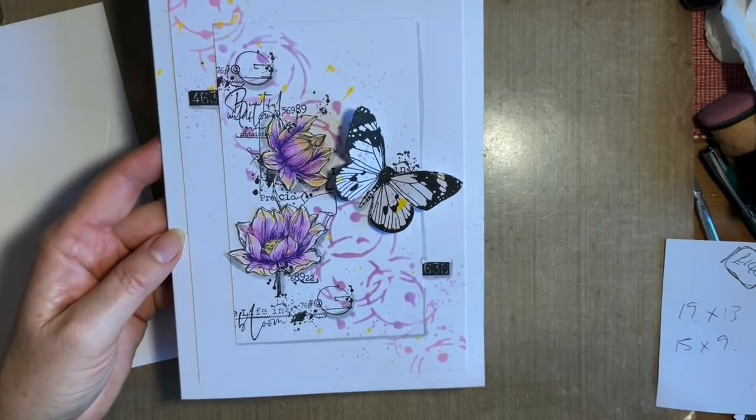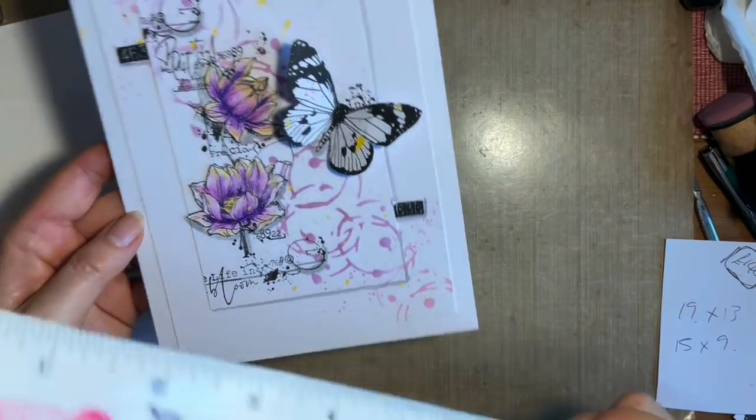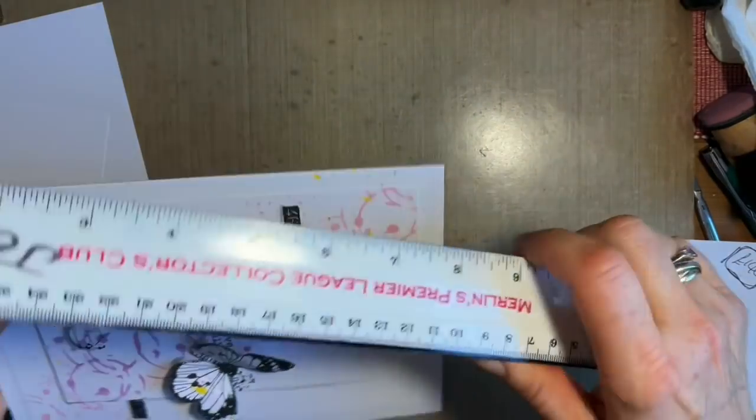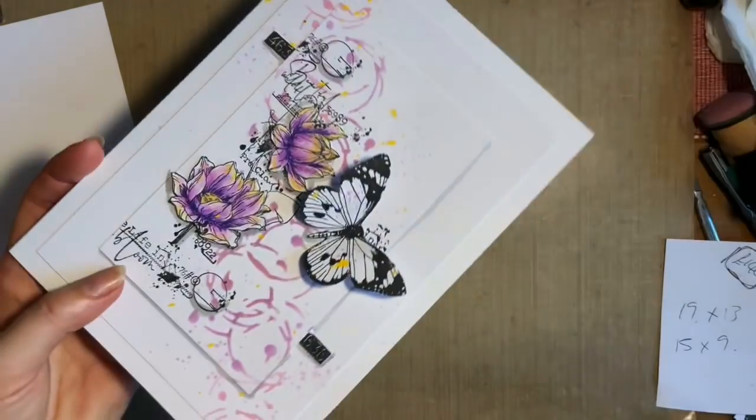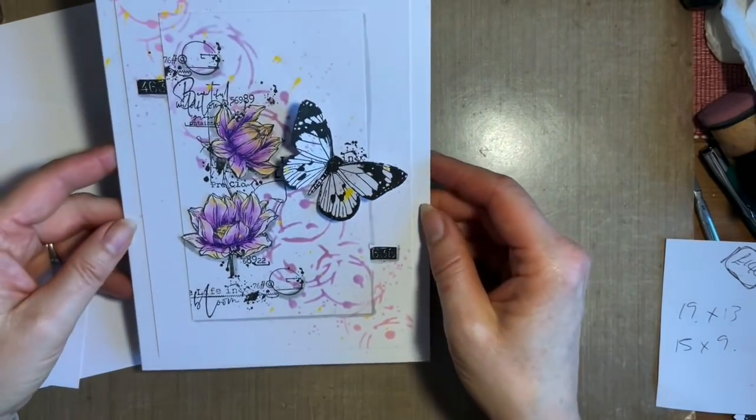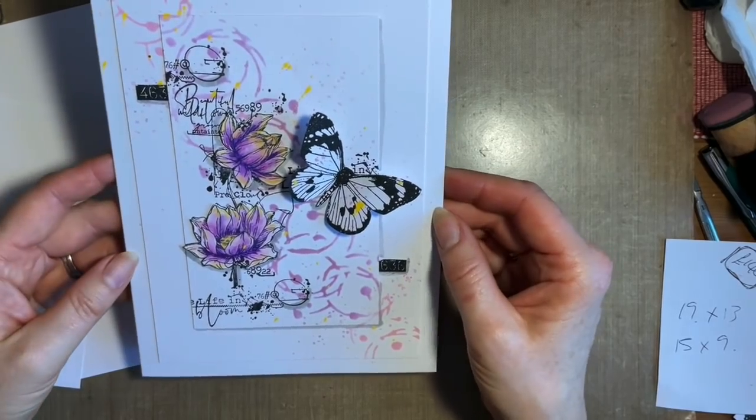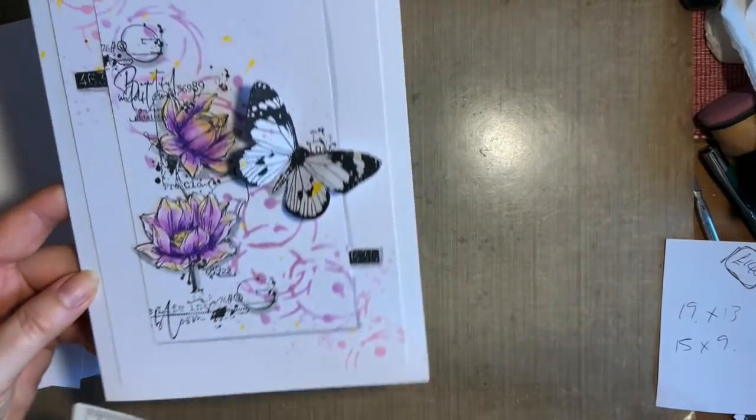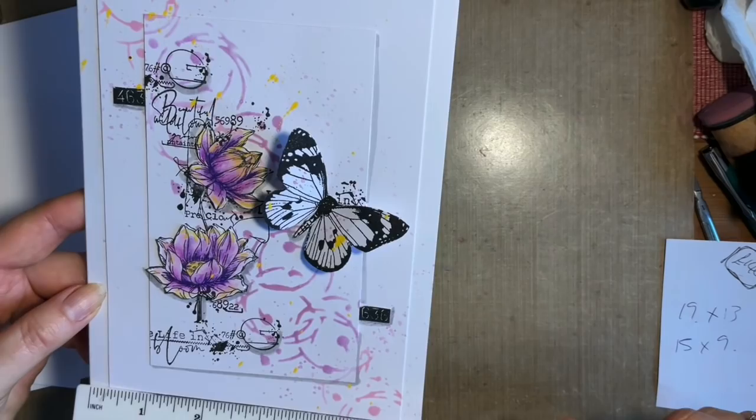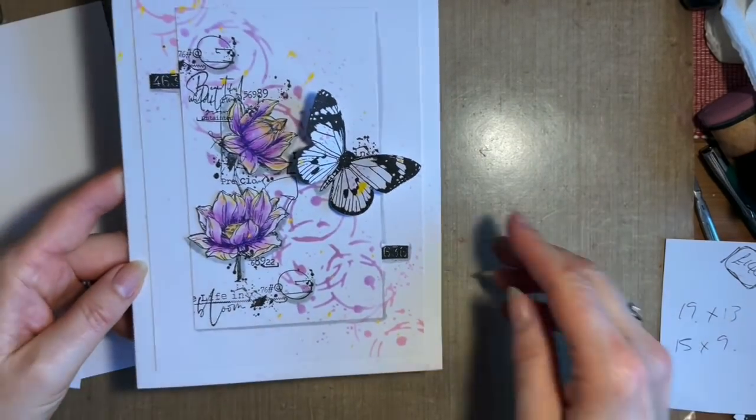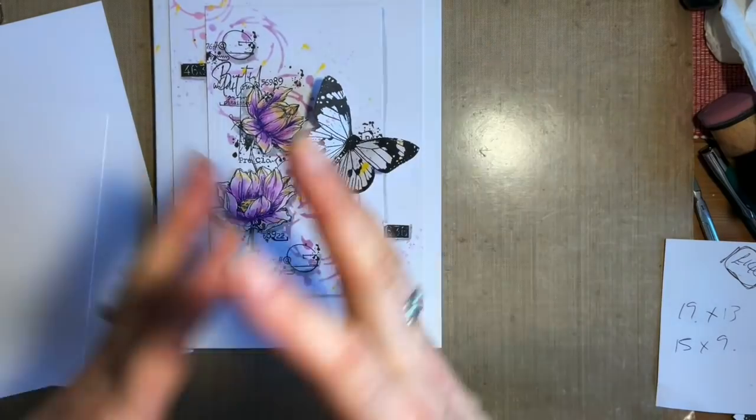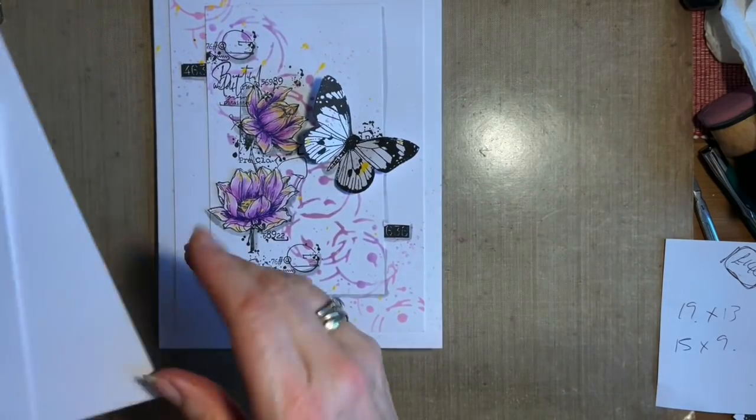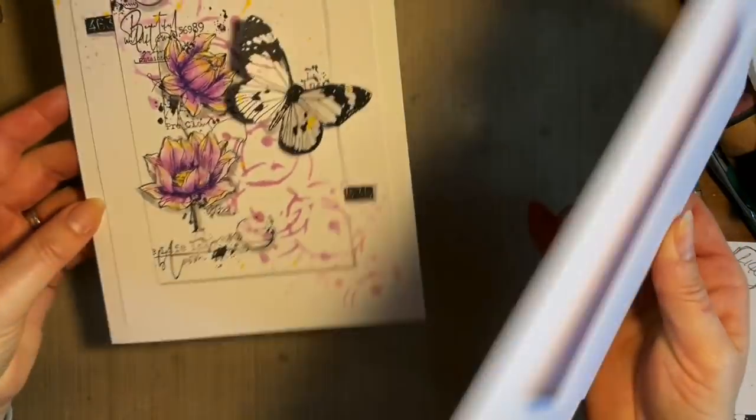The two pieces of card I'm starting off with are 19cm by 13cm and 15cm by 9cm. The card blank I've got is a larger card than you normally get. I spotted them in one of my local shops before lockdown. It's just a nice size, just under 6 inches by just over 8 inches. But obviously you can use whatever size card you've got. What I tend to do is start with my card blank and then cut my card accordingly.